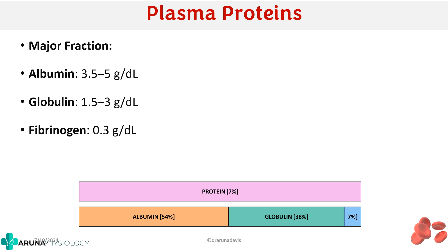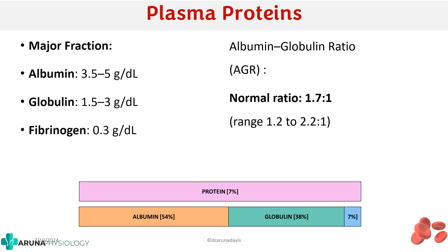There is something called the albumin-globulin ratio. Normally the level of albumin should be more than that of globulin, so the albumin-globulin ratio is around 1.7:1, with a range of about 1.2 to 2.2. In some diseases, production of albumin might be affected, causing a reversal of this ratio — meaning globulin will be more than albumin — which indicates a pathology.